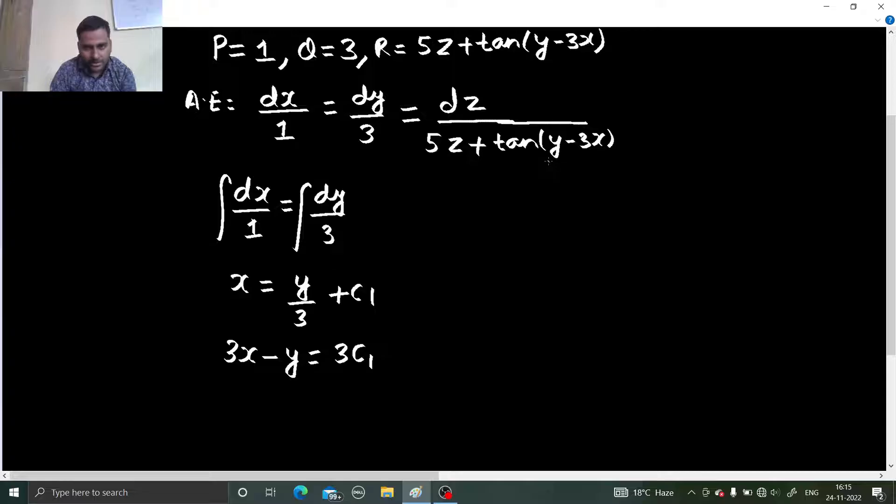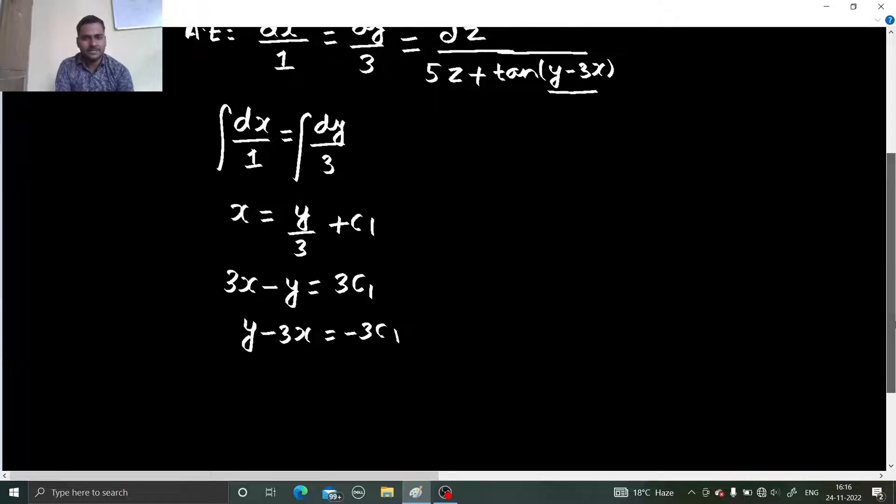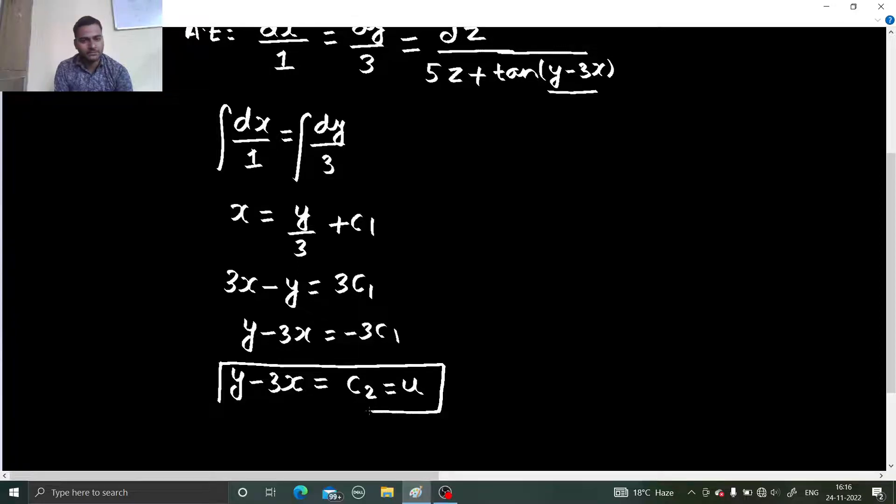So in order to replace this, I need y minus 3x. So let us make adjustment here only. So if I want to write y minus 3x that will be minus 3c1 and this 3c1 let us name this as c2. So y minus 3x is c2 which you can name this as u also. So there you get the first equation. Mark this as 1.